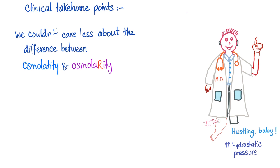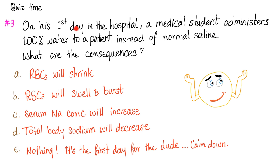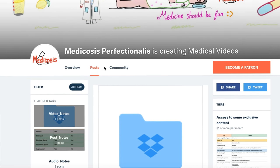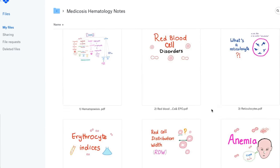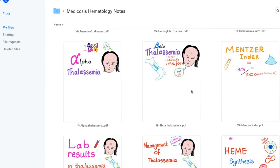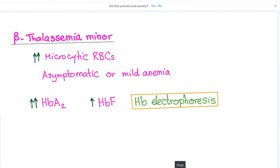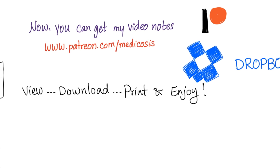Quest time. On his first day in the hospital, a crazy medical student administers 100% water to a patient instead of normal saline, which is a salt solution. What are the consequences of his stupidity? Is it A, RBCs will shrink? B, RBCs will swell and burst? C, serum sodium concentration will increase? D, total body sodium will decrease? Or E, nothing — it's his first day, have mercy. You can also visit my Patreon page at patreon.com/medicosis to download video notes including hematology and more.